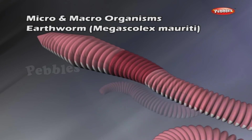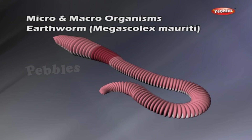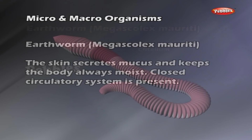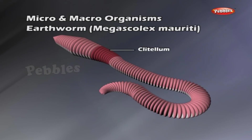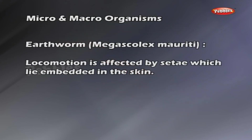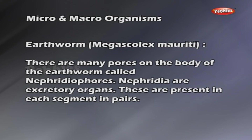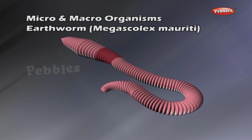Earthworm: the earthworm has a long cylindrical body with ring-like segments. It has a mouth at its anterior end and anus at its posterior end. The skin secretes mucus and keeps the body always moist. A closed circulatory system is present. The clitellum is the thickening of the skin, seen between the 14th to 17th segments. Male and female reproductive openings are within the clitellum. Locomotion is affected by setae, which lie embedded in the skin. There are many pores on the body called nephridiopores.